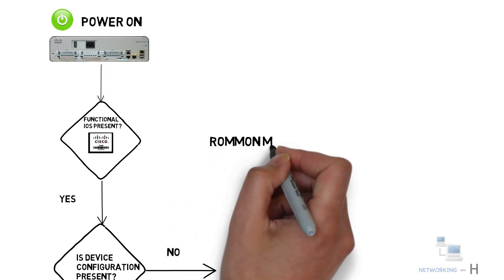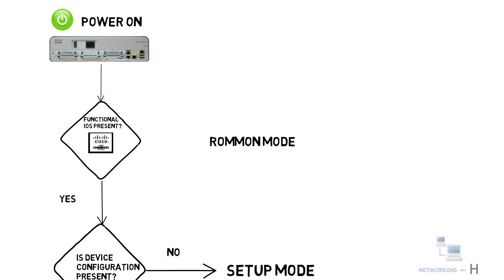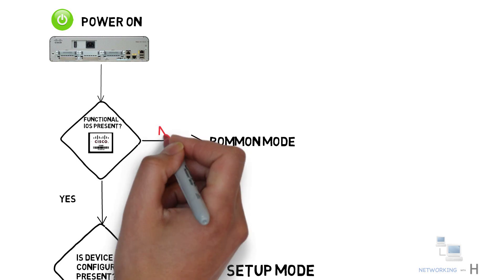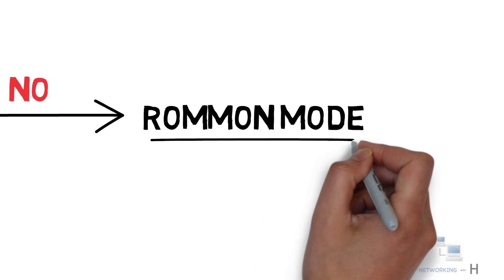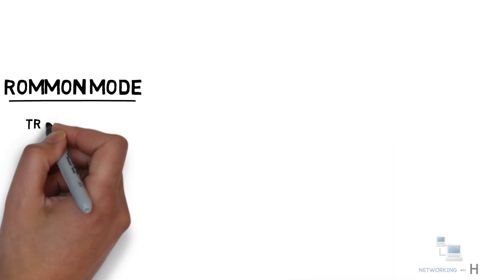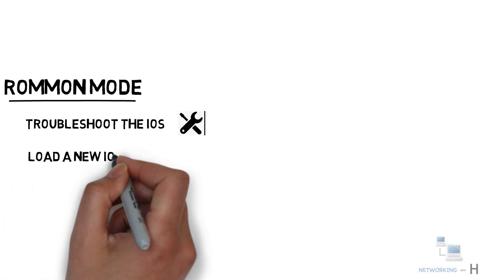The last mode is the ROMMON mode. To understand this mode we need to go back to the boot-up process. During boot-up, the IOS image file is loaded from the flash into the RAM. If the IOS image file is missing or corrupt and fails to load, the device automatically enters the mode known as ROMMON mode. This mode allows the user to troubleshoot the IOS, select a different IOS image file to boot the device, or load a new IOS image file from the TFTP server.